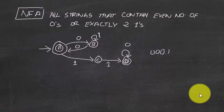In a DFA, every state has to have a transition going from it on all possible input alphabets. So if the input alphabet is zero and one, a state like q1 must have transitions on both zero and one. But in an NFA, there is no such restriction.